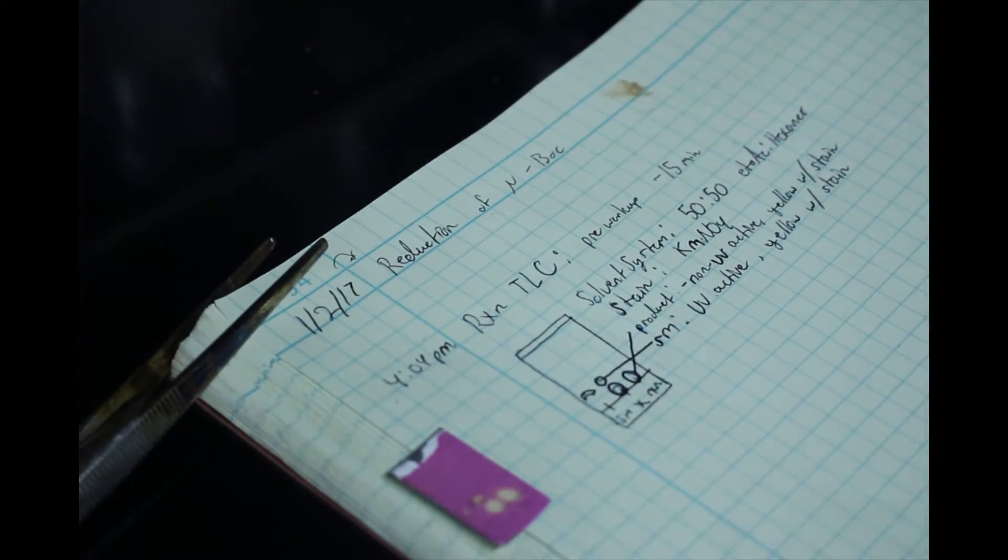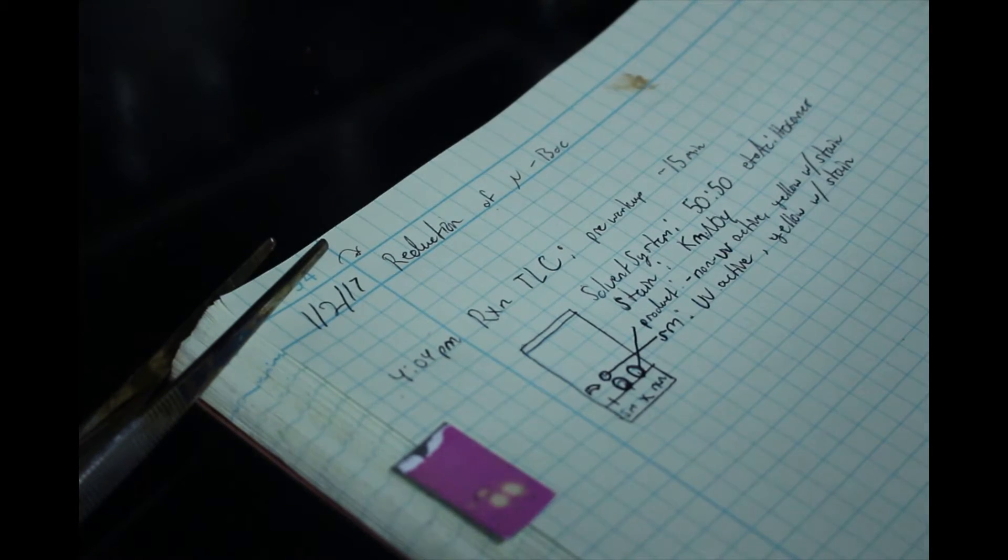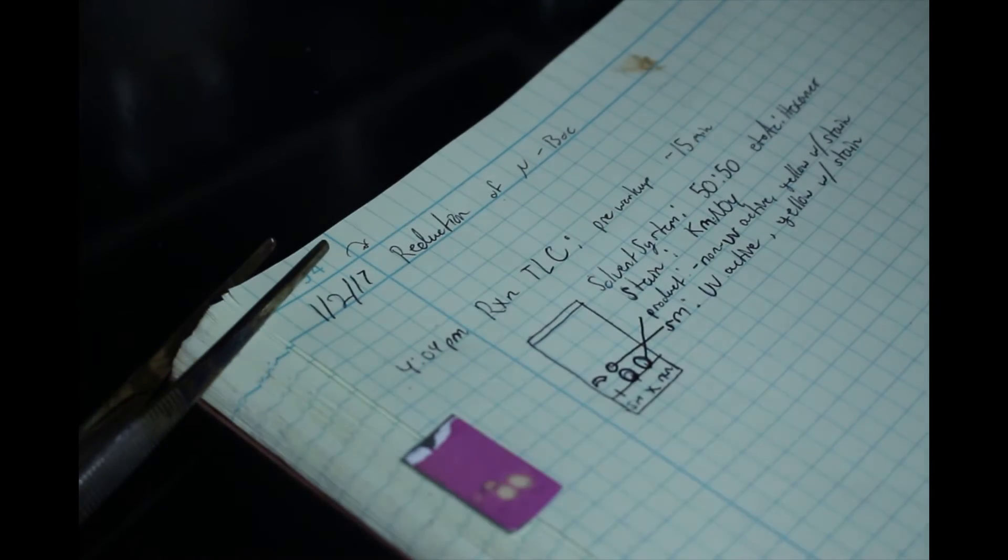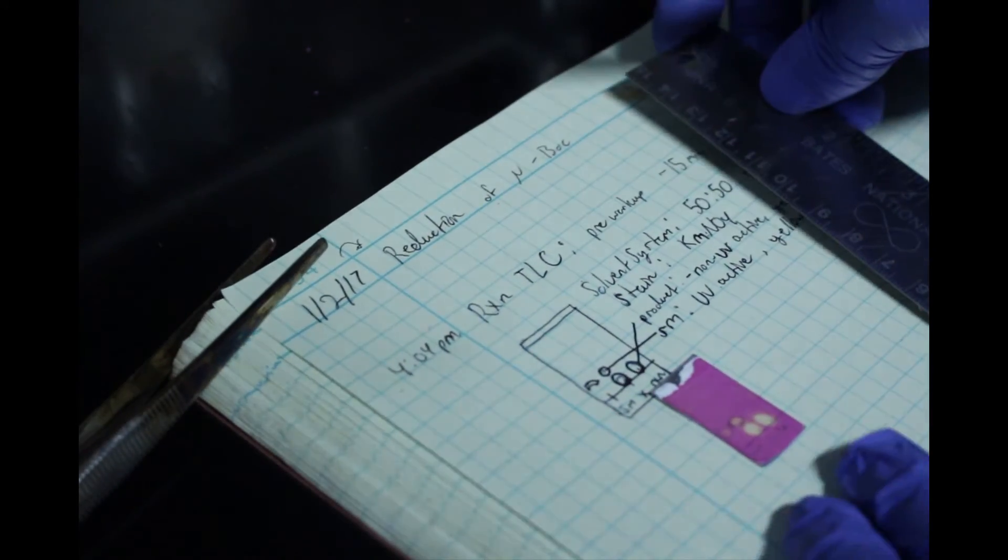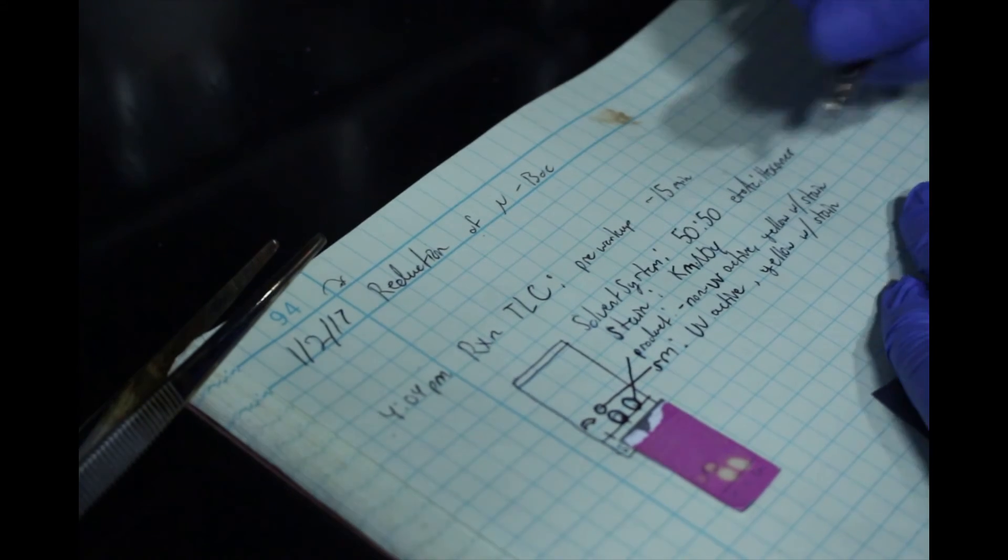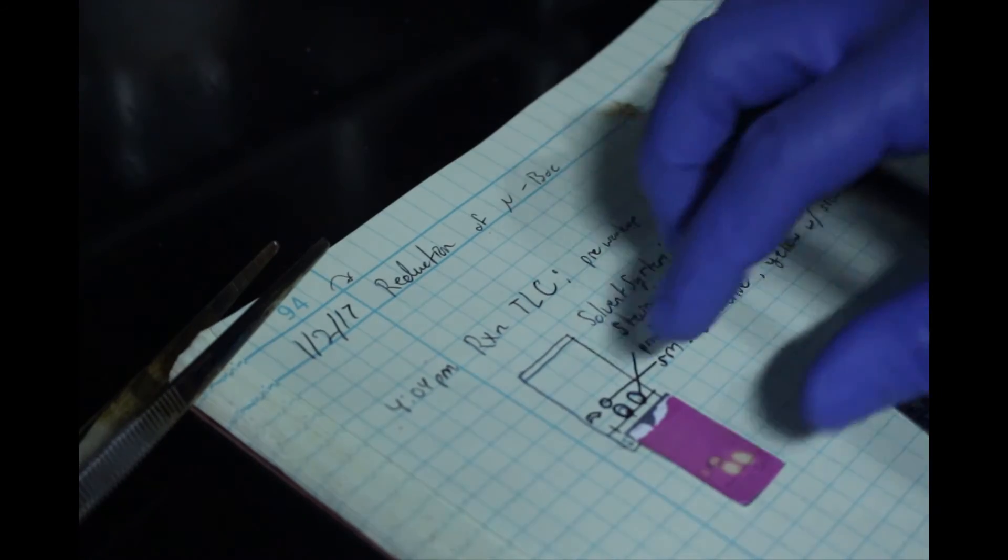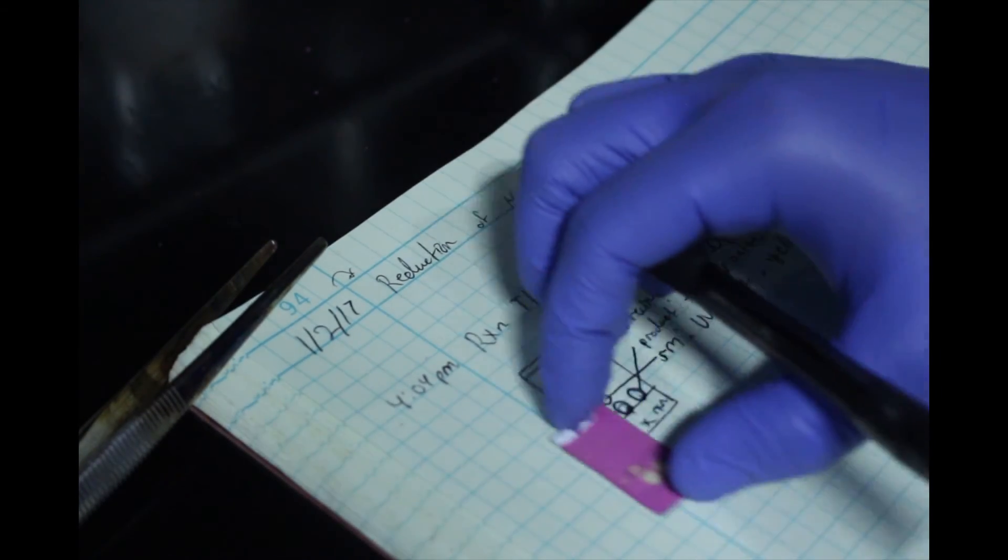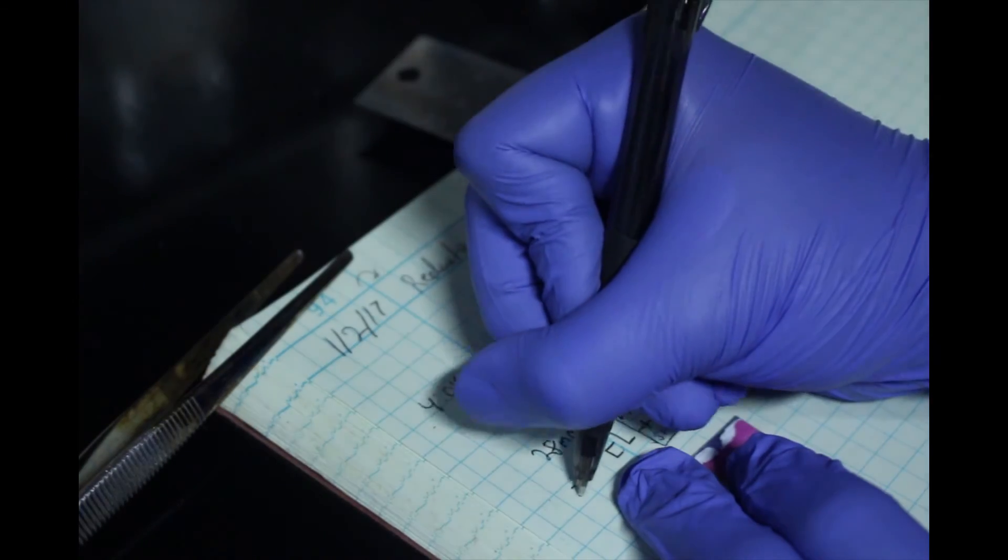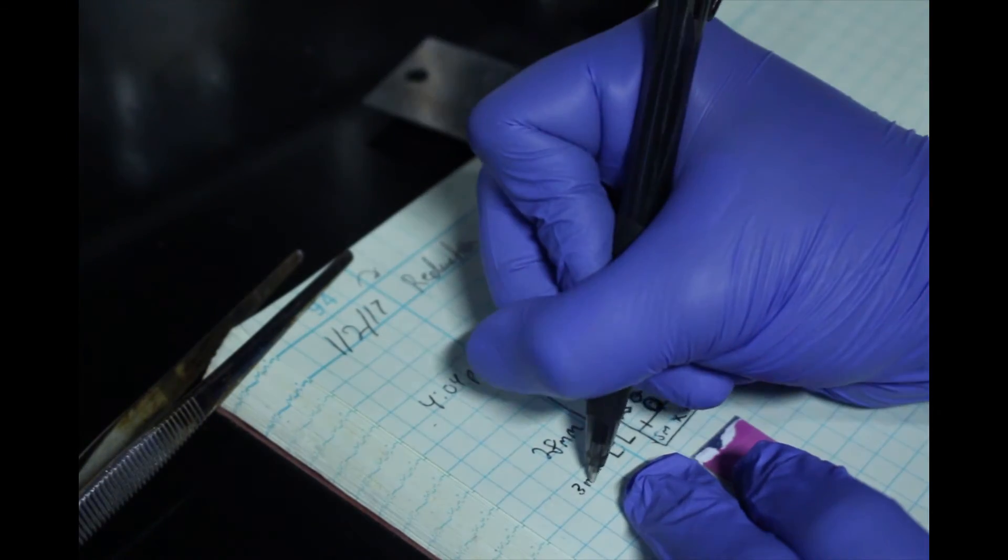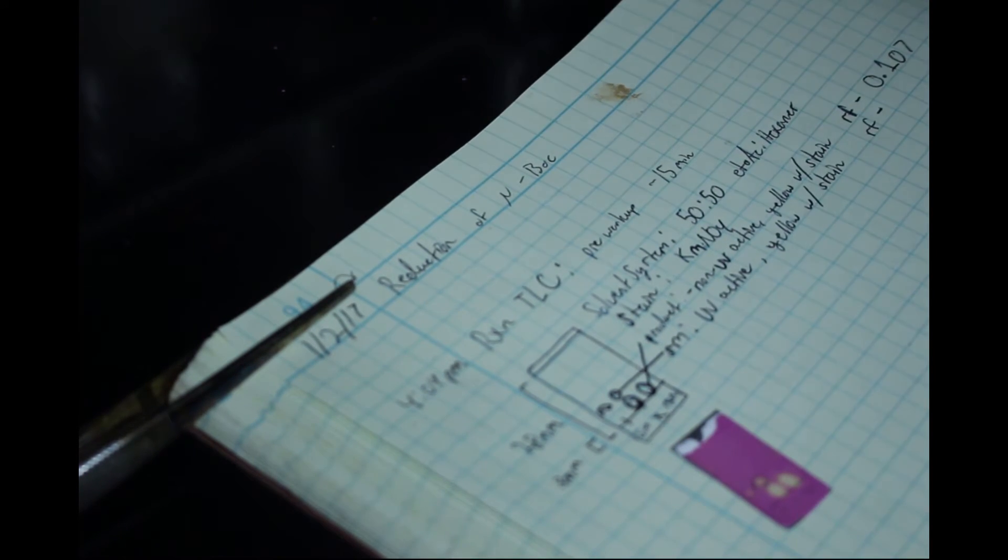If you are using TLC to determine the mobile phase for purification by flash chromatography, distinguished separation between your product and any impurities in the reaction mixture is desired. The distance the spot travels is identified as the retention factor or RF value and is what determines a good solvent system. This value can be calculated by dividing the distance in millimeters from the baseline to the solvent front by the distance in millimeters from the baseline to the middle of the spot. This value should be less than 1 and is unitless.